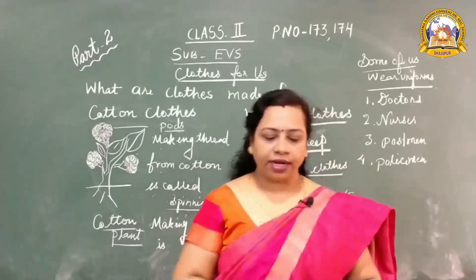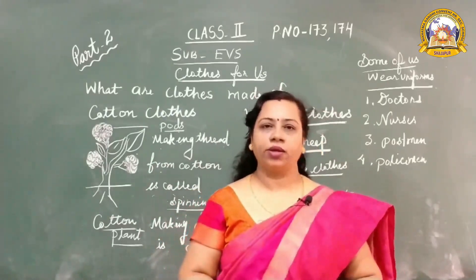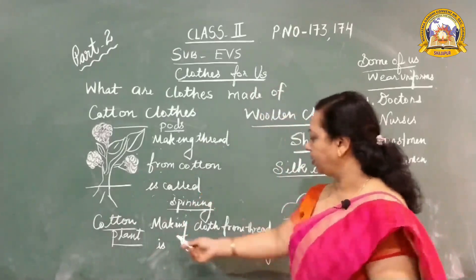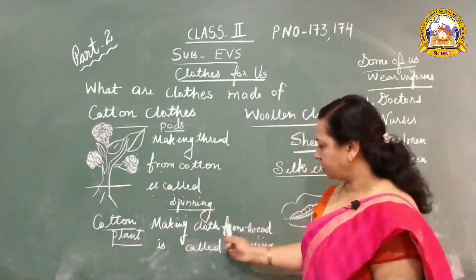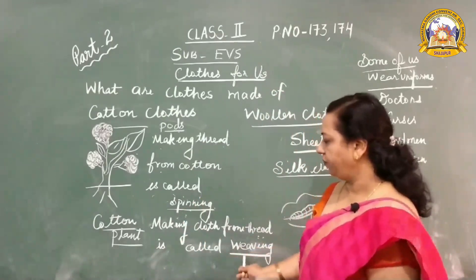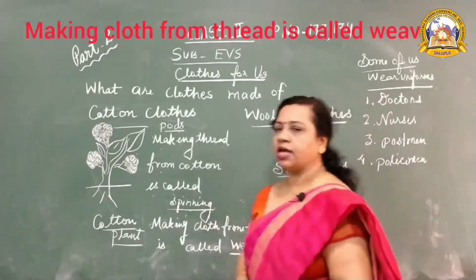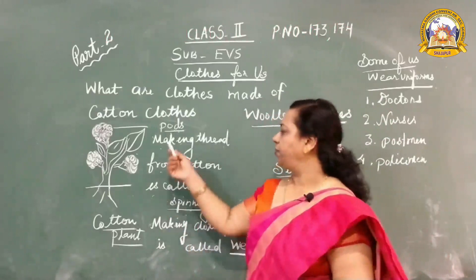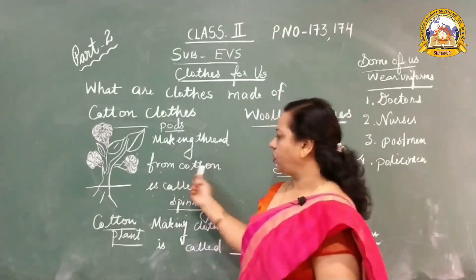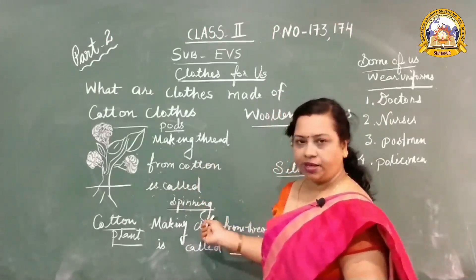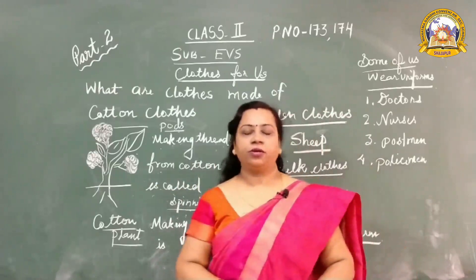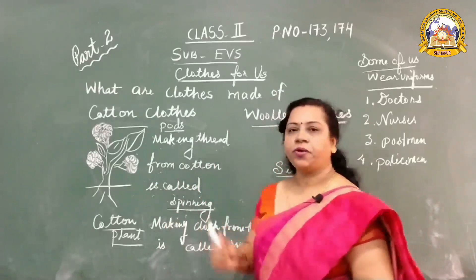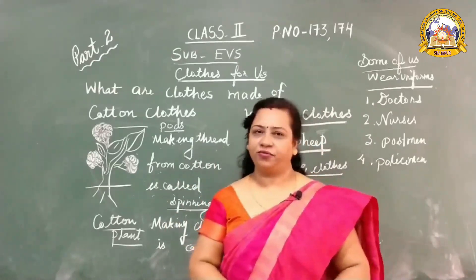This thread is then made into cloth on a loom. Making cloth from thread on a loom is known as weaving. So we have two new words: first, spinning — making thread from cotton is called spinning; and second, weaving — making cloth from thread is called weaving.